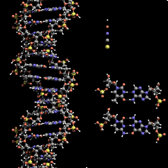DNA usually occurs as linear chromosomes in eukaryotes and circular chromosomes in prokaryotes. The set of chromosomes in a cell makes up its genome. The human genome has approximately 3 billion base pairs of DNA arranged into 46 chromosomes. The information carried by DNA is held in the sequence of pieces of DNA called genes. Transmission of genetic information in genes is achieved via complementary base pairing. For example, in transcription, when a cell uses the information in a gene, the DNA sequence is copied into a complementary RNA sequence.